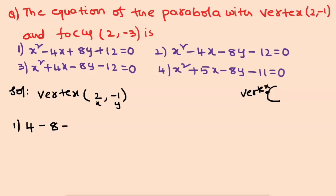We check the first option by substituting x equals 2, y equals minus 1. We get 4 minus 8 minus 8 plus 12 equal to 0 — the first equation is satisfied. We will check the second, third, and fourth options similarly.